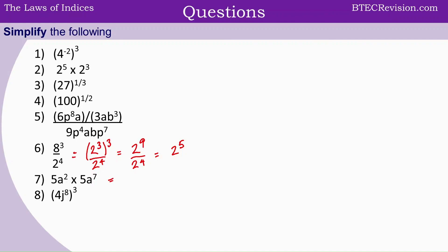For question 7, we have two numbers that can multiply — 5 times 5 is 25. And the a's give us a to the power of 2 plus 7, which is 9. For the last question, we multiply each power by each number: that's 4 to the power of 3 multiplied by j to the power of 8 times 3. Simplifying, 4 cubed is 4 times 4 is 16 times 4 is 64, multiplied by j to the power of 24.